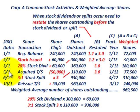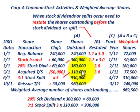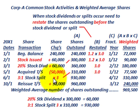On May 1st we acquire treasury stock — we buy back 50,000 shares. So from 360,000 we subtract 50,000, giving us 310,000 shares outstanding. Then on June 1st we have a 3-for-1 stock split. The shares outstanding prior to the split are 310,000, and with a 3-for-1 split we multiply by 3, so 3 times 310,000 gives us 930,000 shares outstanding.